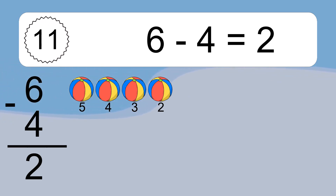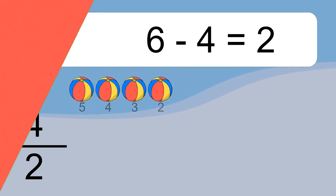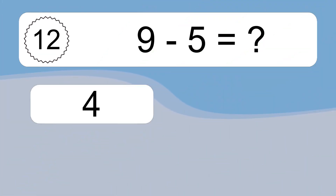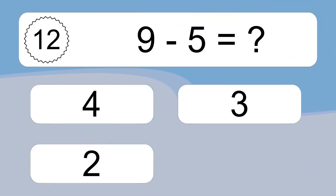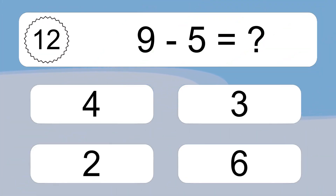6 minus 4 equals what? 6 minus 4 equals 2. Let's count it: 5, 4, 3, 2.